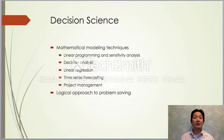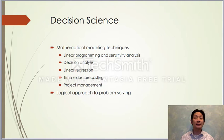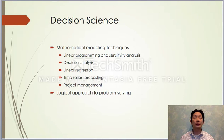Decision science consists of a huge collection of mathematical modeling techniques, out of which we will introduce linear programming and sensitivity analysis, decision analysis — particularly decision-making under uncertainty — linear regression, time series forecasting, and project management.